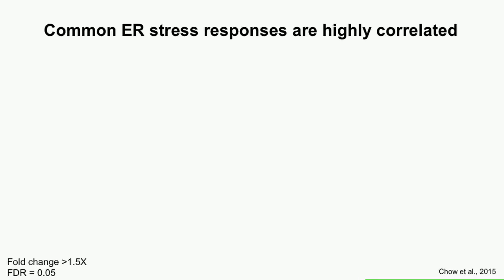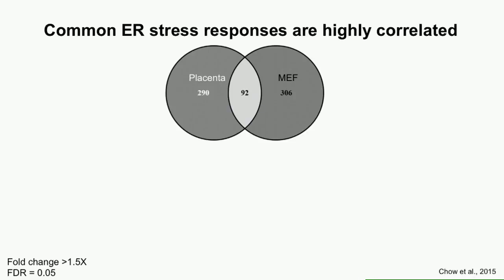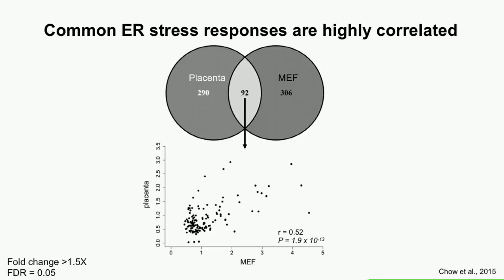We then compared these upregulated genes to our previously published dataset from ER stress in black 6 MEFs (mouse embryonic fibroblasts). We found a pretty large overlap — about a quarter of each dataset's upregulated genes are shared. The 92 overlapping genes show a very strong correlation in fold response between placentas and MEFs, despite the MEFs being cells in a dish and the placenta being in a living animal. These overlapping genes include all the canonical ER stress response genes — XBP1, ATF3, and BIP — really making up the core response.